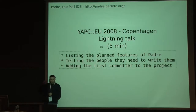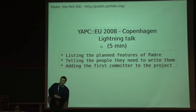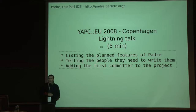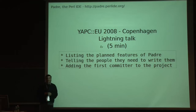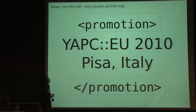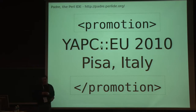So what happened at YAPC Europe in 2008? It was in Copenhagen. I gave a lightning talk — lightning talks at Perl conferences are five minutes long. The main point I made was I gave a list of all the features I'd like to have in Padre, and told people: everything will be there if you write it. Just two or three hours after this talk, I could add the first contributor to the project — so it was a successful talk. By the way, YAPC Europe 2010 is going to take place in Pisa, Italy in August, and if you'd like to hear more about it, there is a Perl stand in the AEW building.